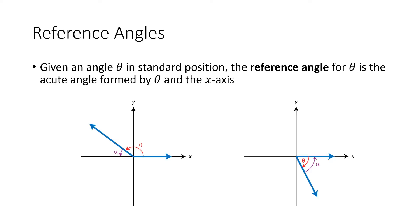So what's a reference angle? When we have an angle in standard position, the reference angle for that angle is the acute angle formed by theta and the x-axis. Wherever the terminal side ends up, we look at that angle formed by the terminal side and the x-axis — either the positive x-axis or sometimes the negative x-axis. Whatever that acute angle is, it's always going to be between 0 and 90 degrees, and that's what we call the reference angle.